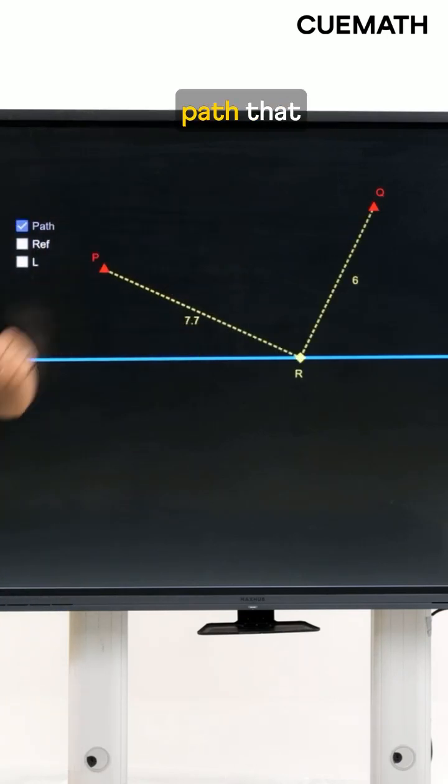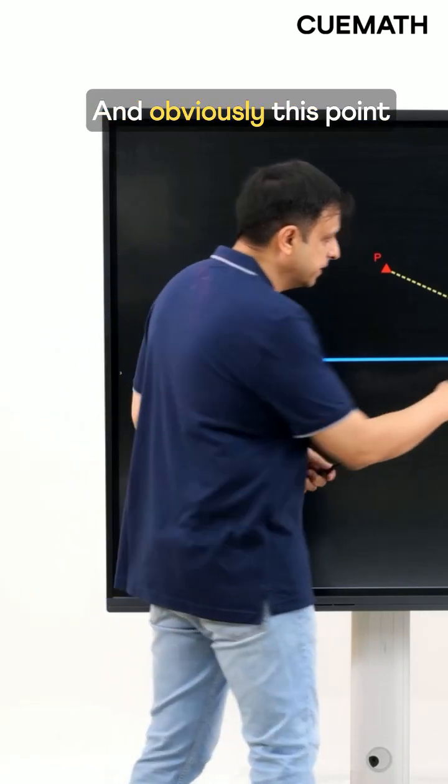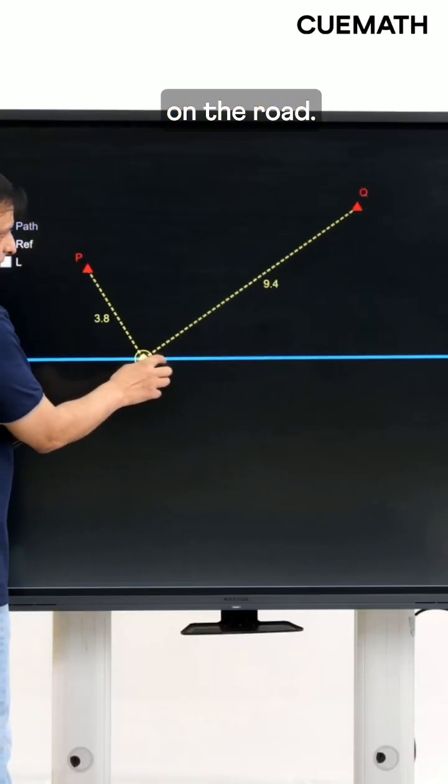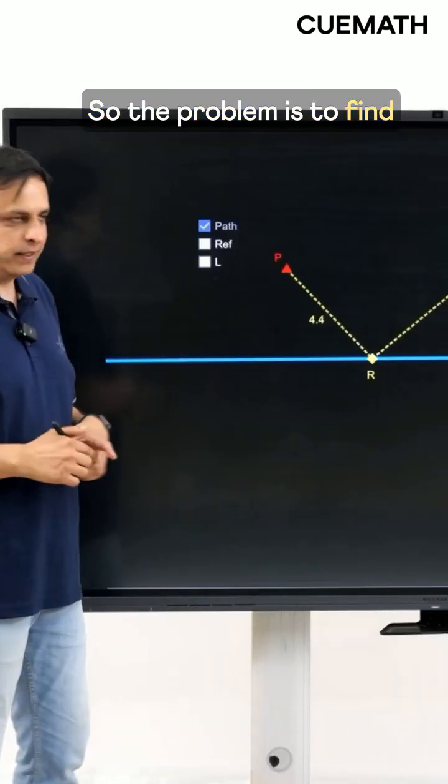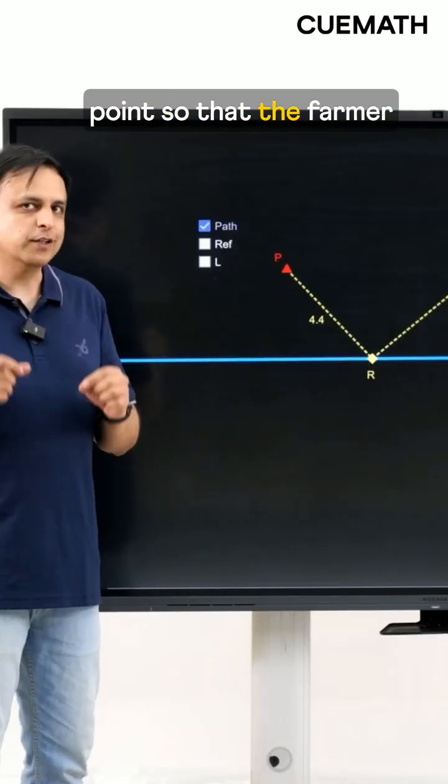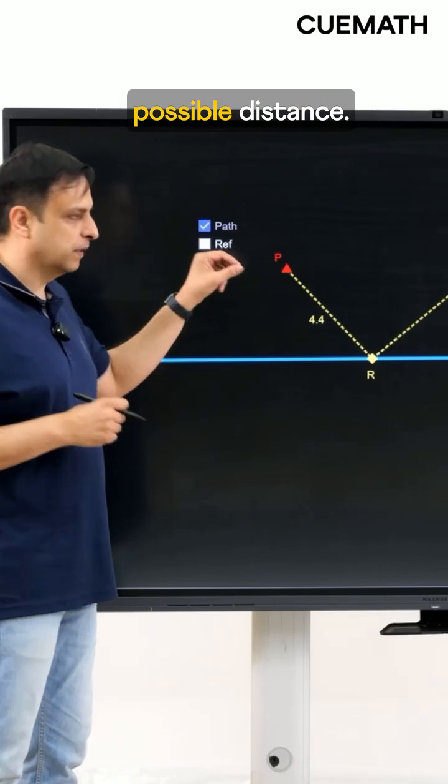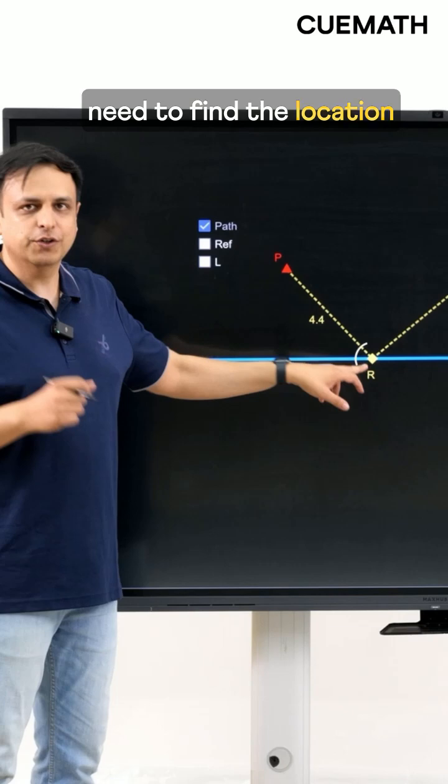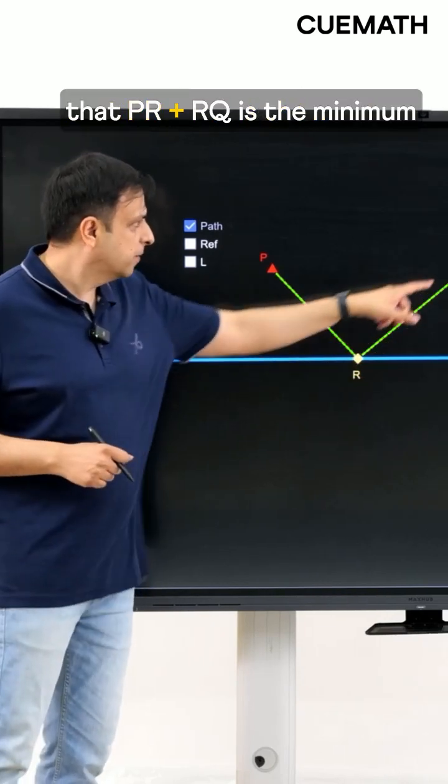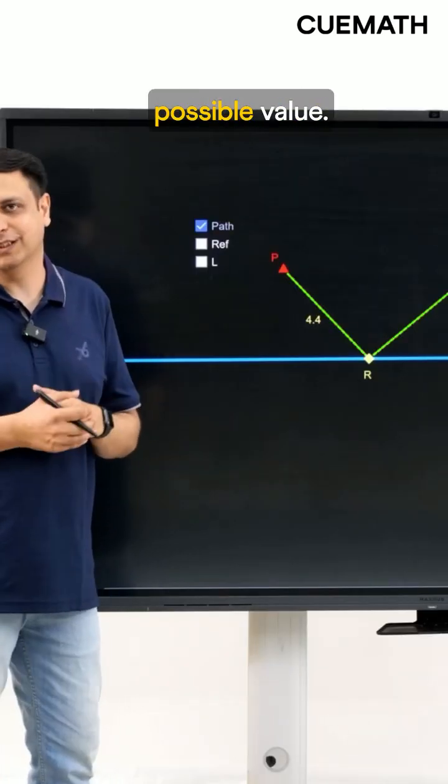So here is one possible path that the farmer takes and obviously this point could be anywhere on the road. So the problem is to find the location of this point so that the farmer has to walk the minimum possible distance, which means that we find the location of R such that TR plus RQ is the minimum possible value.